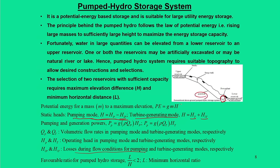During pumping mode, the height traveled by water is h, and during turbine mode the same height applies, but losses differ — losses during pumping mode and turbine mode can be different. Further, the turbine may not operate continuously. For example, if pumping mode runs for 8 hours, the turbine can operate for only 2 hours. So the controlling factors h_p and h_t are different. Accordingly, we have different flow rates: Q_p for the flow rate during pumping mode and flow rate during turbine mode operation.